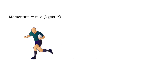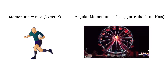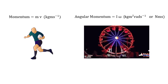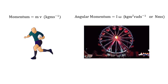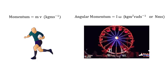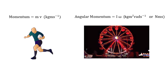So, momentum — mass times velocity. There's an object running along, mass m, velocity v. His linear momentum is mv, and that is kilogram metres per second. Here's an object which is rotating. It has a moment of inertia I about a particular axis. Its angular velocity is omega, and it has angular momentum I omega — that's kilogram metres squared times radians per second, or equivalently newton metre seconds.